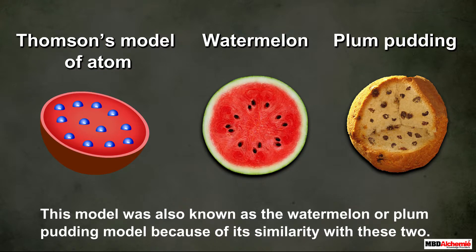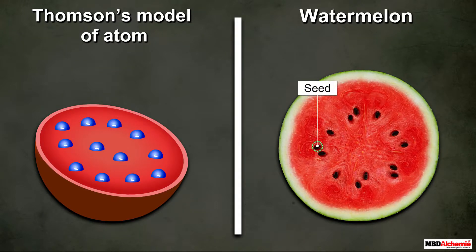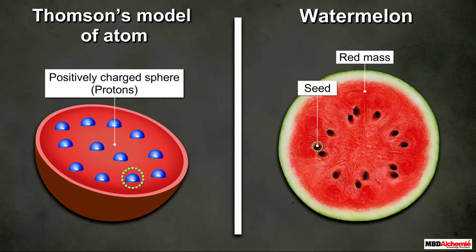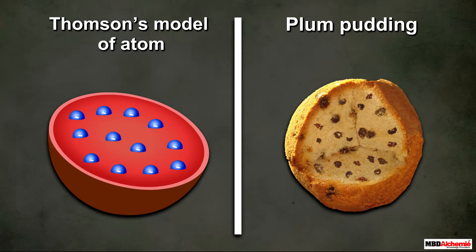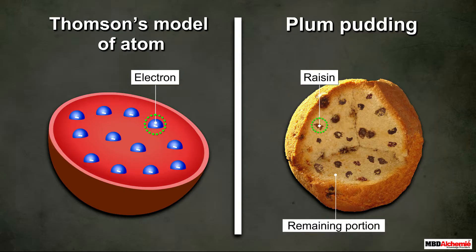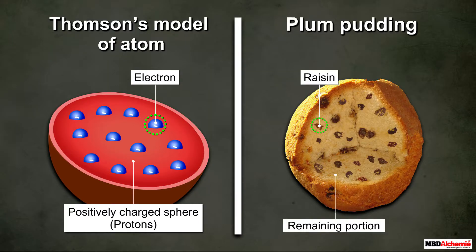This model was also known as the watermelon or plum pudding model because of its similarity with these two. The seeds of the watermelon can be equated to the electrons or the negatively charged particles, and the red mass can be equated to the protons or the positively charged sphere. Similarly, in a plum pudding, the raisins can be considered as the electrons and the remaining portion as the positively charged sphere.